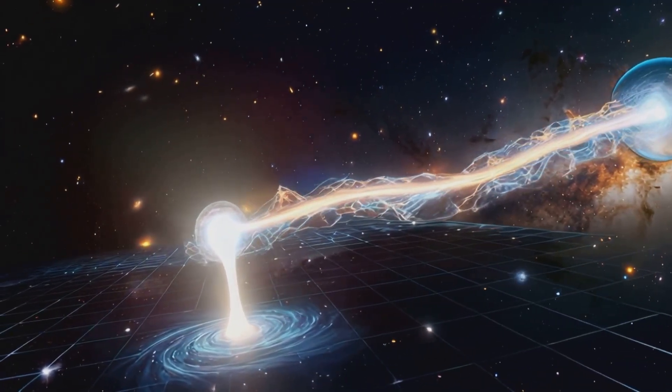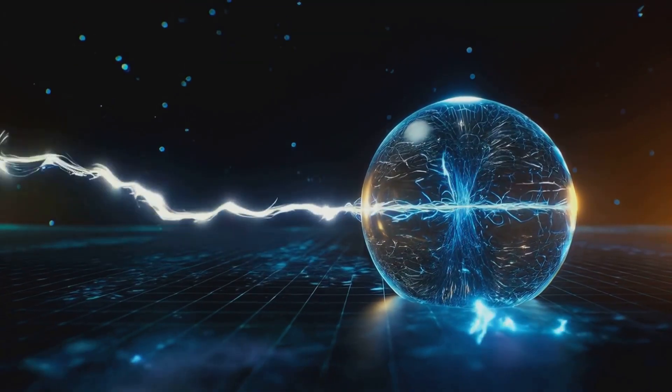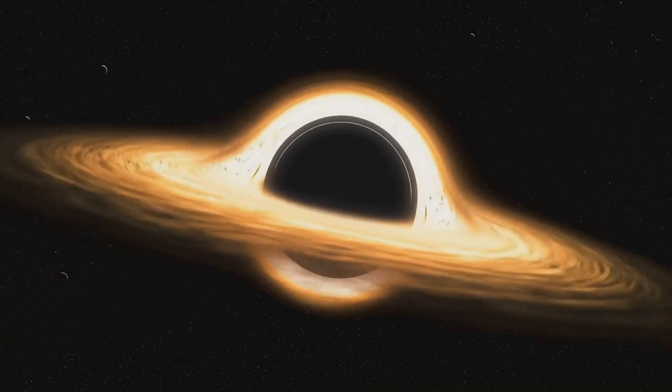The event horizon acts as a filter, a gatekeeper of information. It ensures that the amount of information within a given region of space never exceeds the information encoded on its boundary.